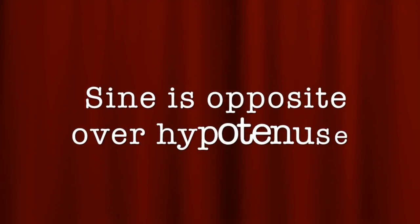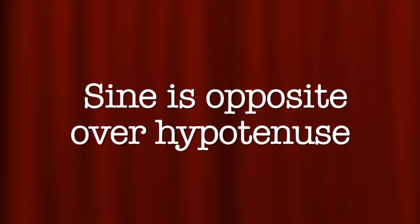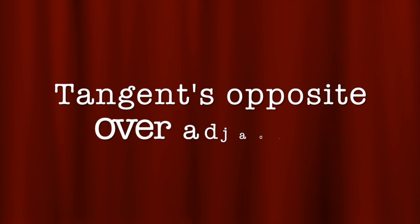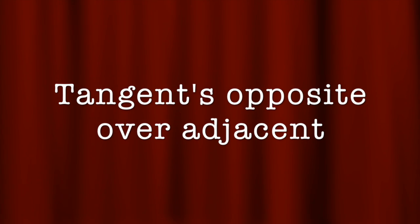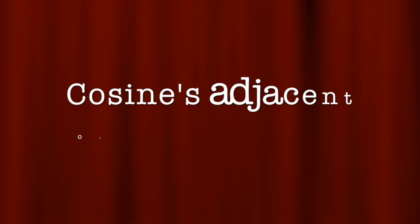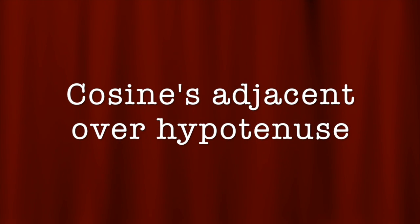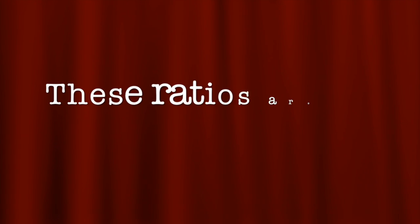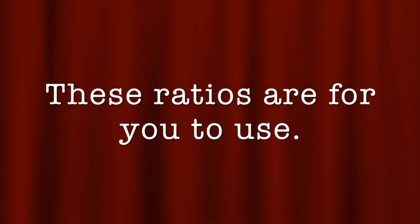SOH-CAH-TOA! Sine is opposite over hypotenuse. Tangent is opposite over adjacent. Cosine is adjacent over hypotenuse. These ratios are for you to use.